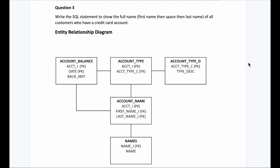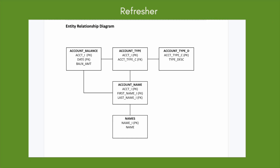Before we start with question number three, I'm going to give a refresher of the entity diagram and the tables so that you are well versed with it. If you're watching the videos in continuity and already know it, you can skip this part and go directly to where I'm solving the question. There are a total of five tables: account_balance, account_type, account_type_d, account_name, and names. The lines between them indicate these tables are connected via primary keys.